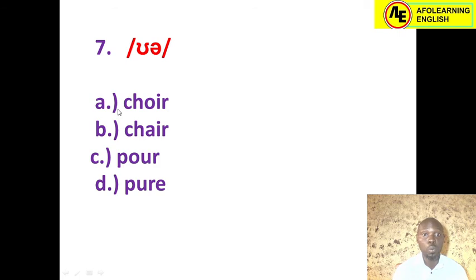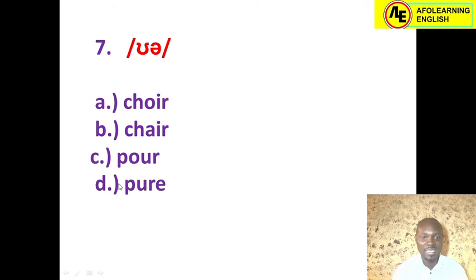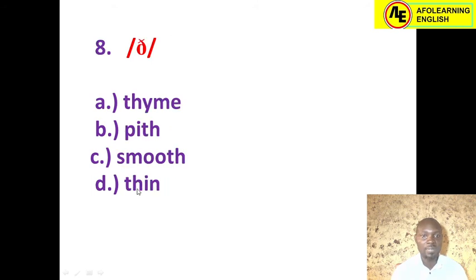Number seven: the diphthong /ʊə/, another schwa-ending diphthong — the short /ʊ/ glides into the schwa /ə/. Option A 'choir' — no. Option B 'chair' — no, that's /eə/. Option C 'hall' — no. Option D 'pure' — yes, /ʊə/, correct answer. The correct answer is option D: pure.